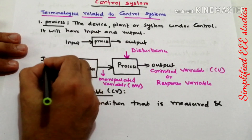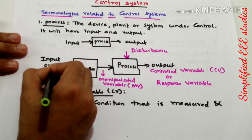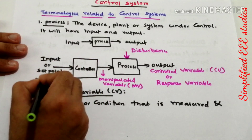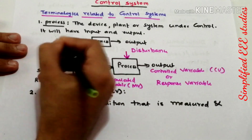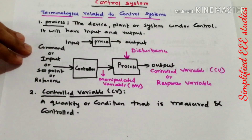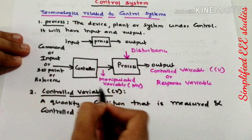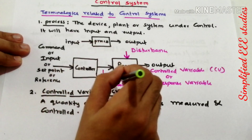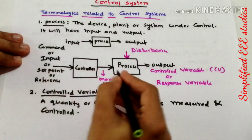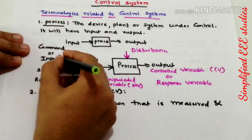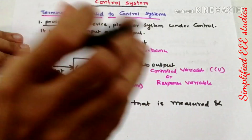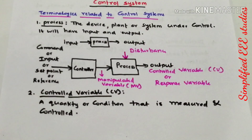The input to the controller can be called the set point, reference, or command. With respect to this command or reference input, the manipulated variable is formulated, and the system produces the required amount of controlled variable as output.